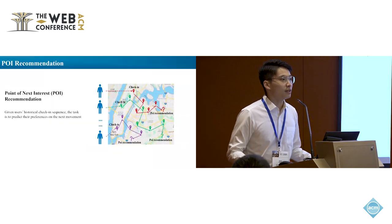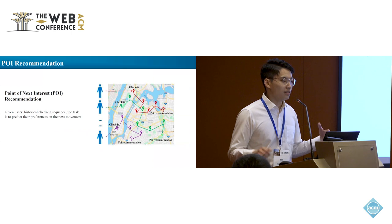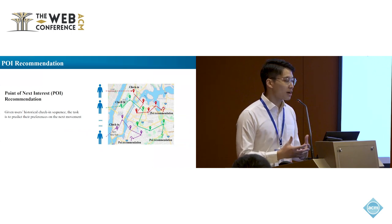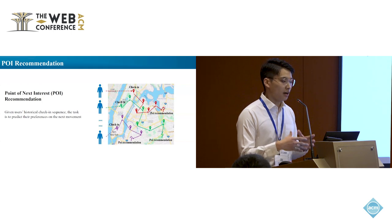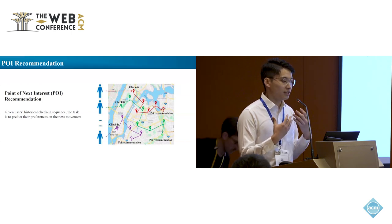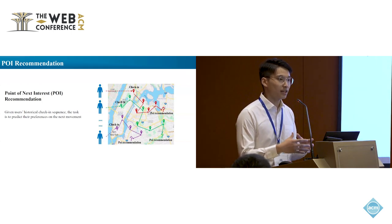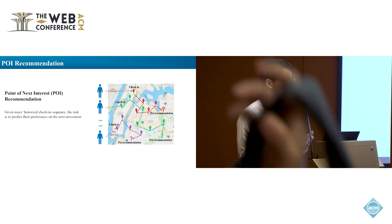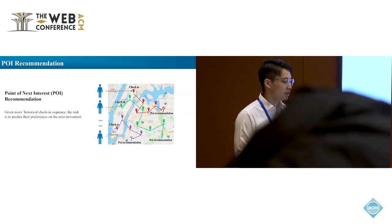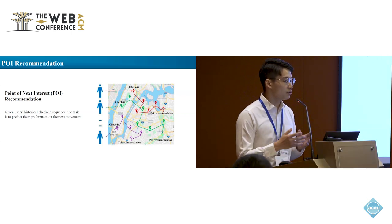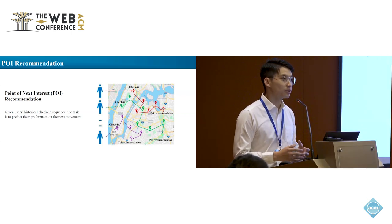Recommendation is a system to predict contents for users based on their preferences or interactions. POI recommendation is one sequential task, where users have a sequence of check-in data, such as restaurants, shopping malls, etc. The task is to predict the preference on the next movement, given the user's historical check-in sequences.